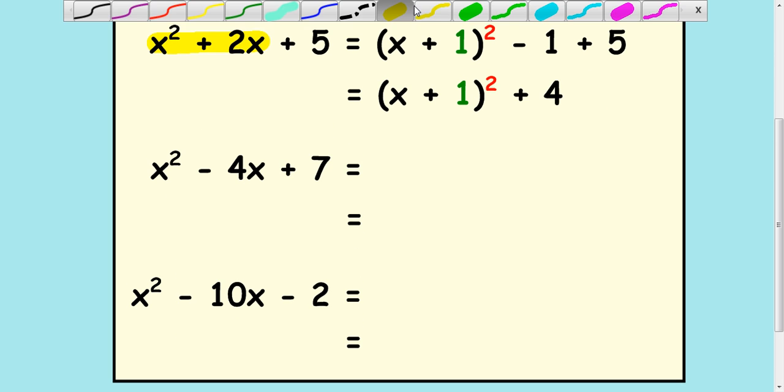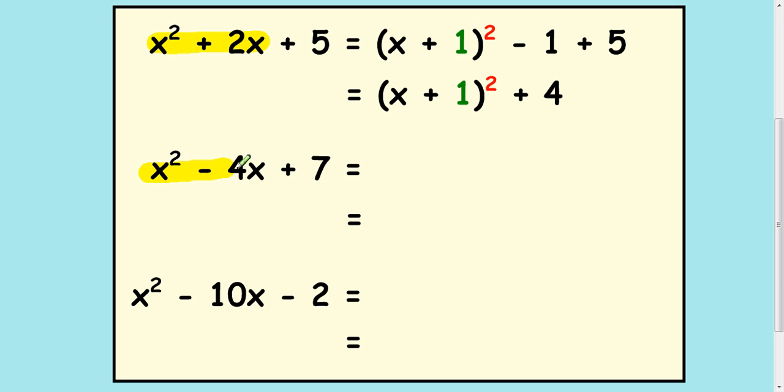Next example. Again, to start off, I'm just considering this first bit like the last screen. So that's going to be (x - 2)². It's going to generate an extra +4 with a negative 2 squared. Take it away. And then add on the 7. So (x - 2)² + 3.